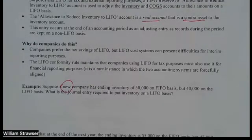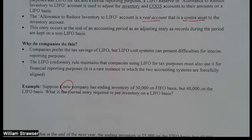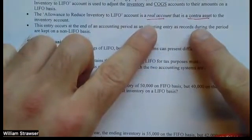We've seen this with the allowance for doubtful accounts — it reduces the balance of our accounts receivable ledger account and reports accounts receivable at that reduced amount on the balance sheet. We've seen it with the allowance for sales returns, which similarly reduces accounts receivable when reporting it on the balance sheet. We've also talked briefly about some contra and adjunct accounts under the periodic system. All of those are ways of keeping information in separate ledger accounts, but then combining them to be reported on the financial statements. So the LIFO reserve is a contra inventory account.